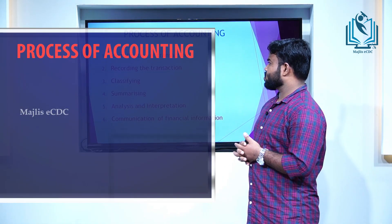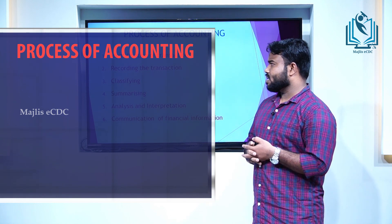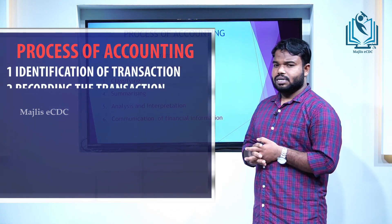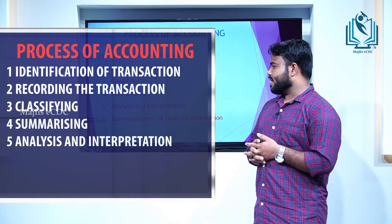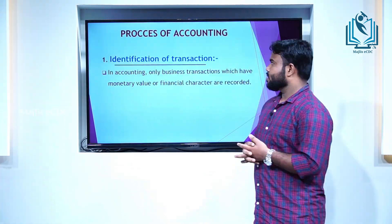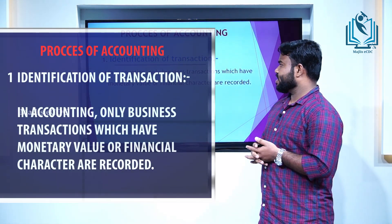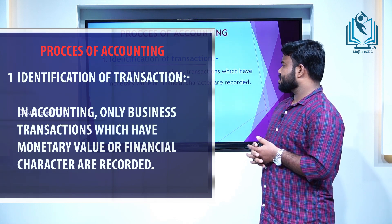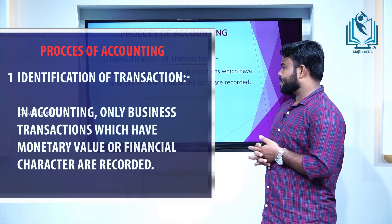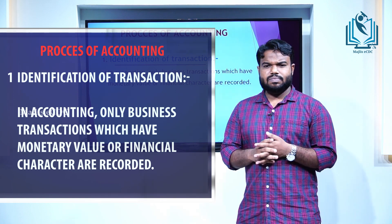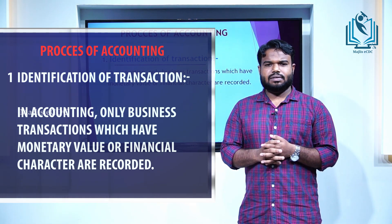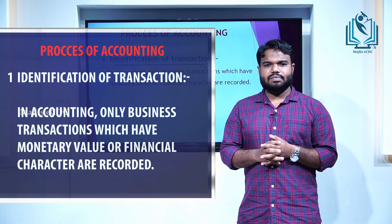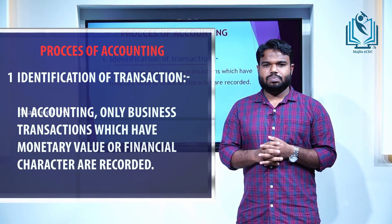Next, we can discuss the process of accounting. There are six major processes for accounting: identification of transaction, recording the transaction, classifying, summarizing, analyzing and interpreting, and communication of financial information. The first process is identification of transaction. In accounting, only business transactions which have monetary value or financial character are recorded. Before recording, we have to identify whether the transactions have monetary value or not. Other transactions should be avoided.